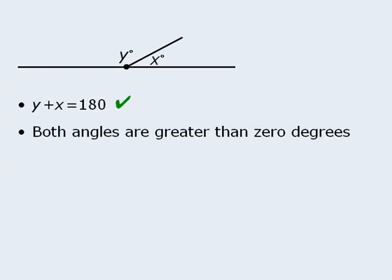Can we assume that both angles here are greater than 0 degrees? The answer here is also yes. If an angle is shown in a diagram, then we can assume that that angle is indeed greater than 0 degrees.